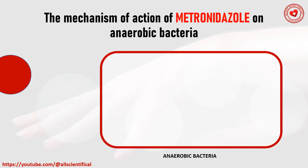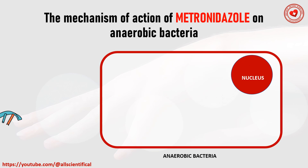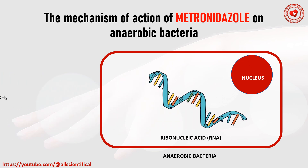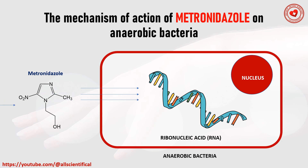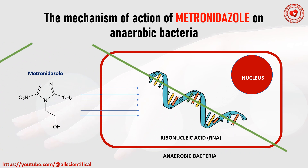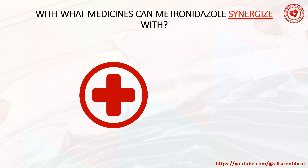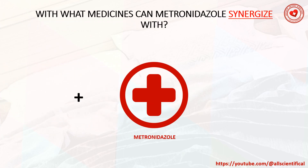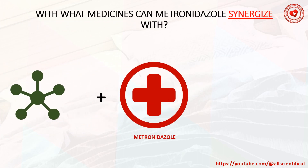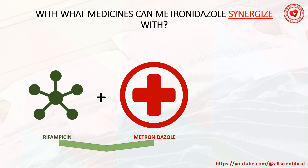The selective effect of metronidazole on anaerobic bacteria is due to the fact that their cells provide conditions for the drug to interact with ribonucleic acid, leading to cell death. Metronidazole may synergize with rifampicin and nalidixic acid.